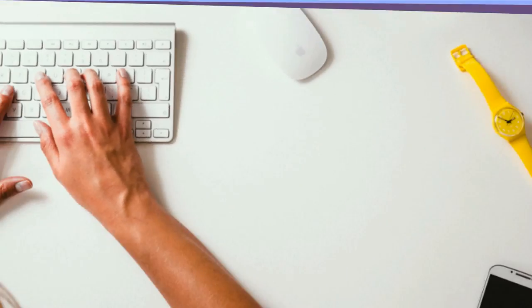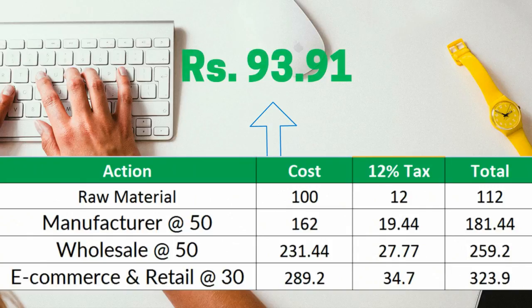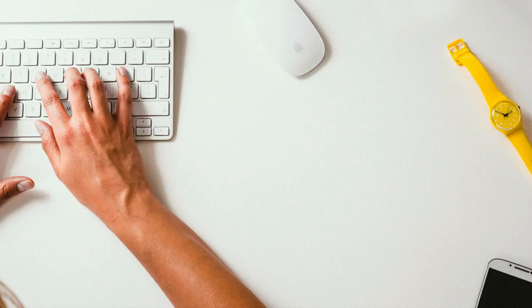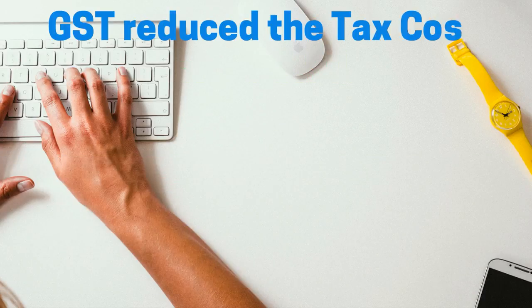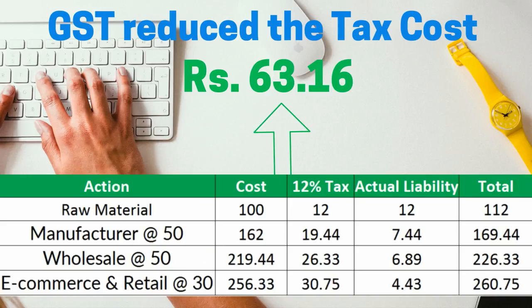As we can figure out from the pre-GST example given in the previous lecture, the cost of the product is much higher in the scenario when no input tax credit facility is provided. Total tax paid without availing ITC is 93.91 rupees. Introduction of GST reduces the tax cost by 63.16 rupees, which forms a major portion of the cost of the product, thus reducing the cost of goods and services by eliminating the cascading effect of taxes.